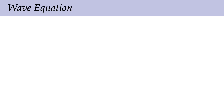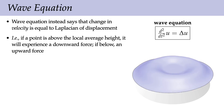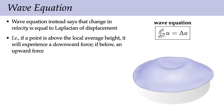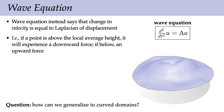We can also understand the wave equation from this point of view. The wave equation says that the change in velocity equals the Laplacian of the displacement. In other words, if a point is above its local average, it experiences a downward force; if it's below its local average, it experiences an upward force. This gives us a lot of intuition for what the Laplacian means.